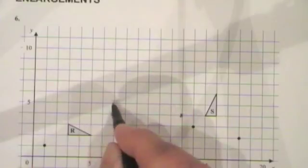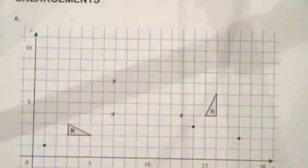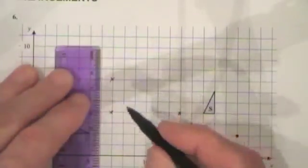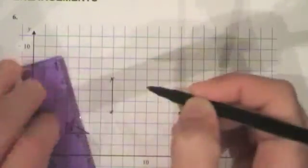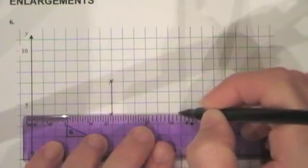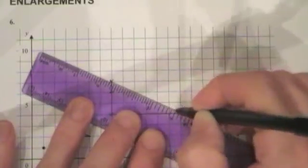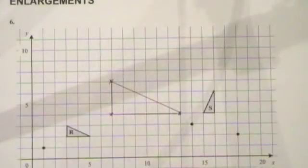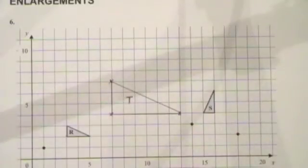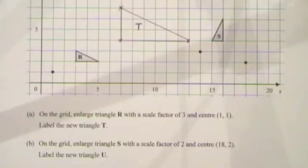The third point is two across and two up from the center. With scale factor three we do that three times: two across and two up, two across and two up, two across and two up. Now we have the three corners of the triangle, we can line them in. Not only have we moved all corners three times further away, but all sides are three times as long. The question asked us to label the new triangle as T.